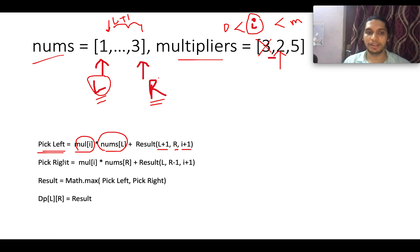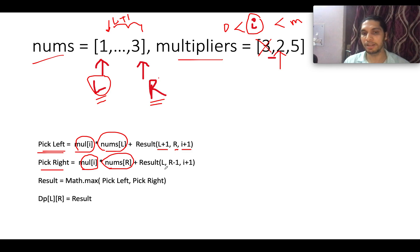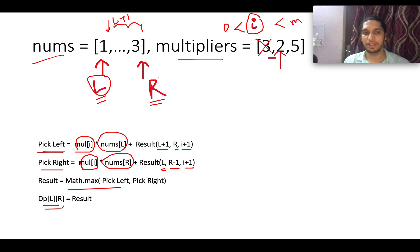If we pick the rightmost element, the equation is: mul[i] × nums[r], and the remaining subproblem is dp(l, r-1, i+1) — left stays the same, right decrements by one, and i increments. We compute both pick_left and pick_right values, take the maximum, and store it as dp[l][r]. This is exactly what the question hints at.